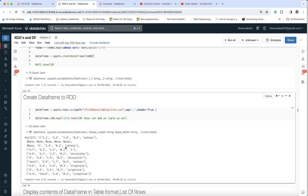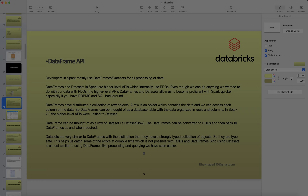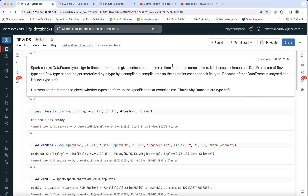The DataFrame output is very tabular in structure — it is easy to understand compared to the output of an RDD. DataFrames and RDDs are used for processing data. Datasets are very similar to DataFrames with very little distinction. The major difference is that Datasets are strongly typed — they are type-safe. DataFrames are not type-safe.